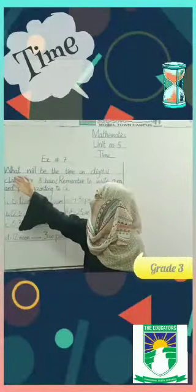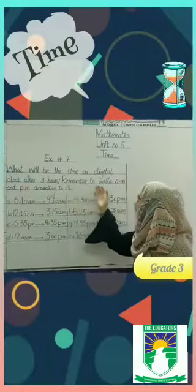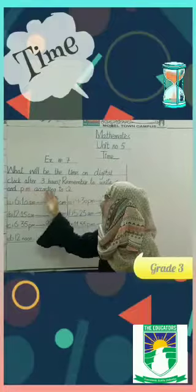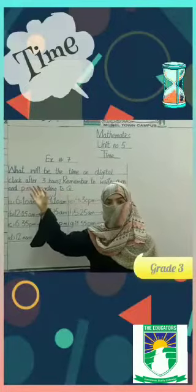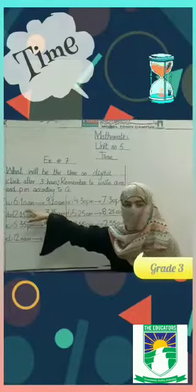The question is what will the digital clock read after 3 hours. Remember to write am and pm according to the question. After 3 hours means next 3 hours. You will add 3 hours in every question.